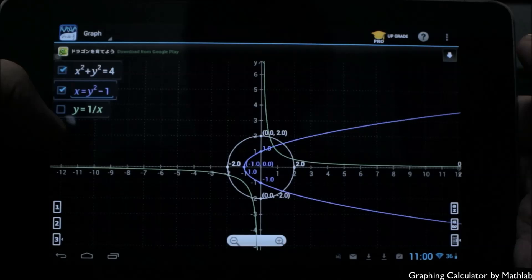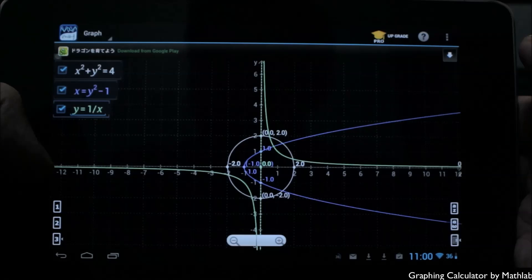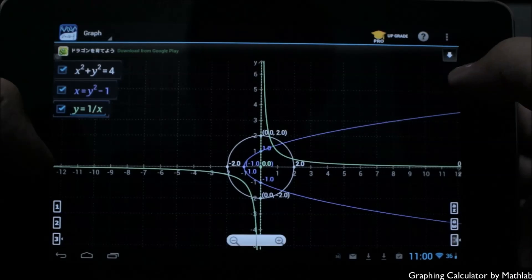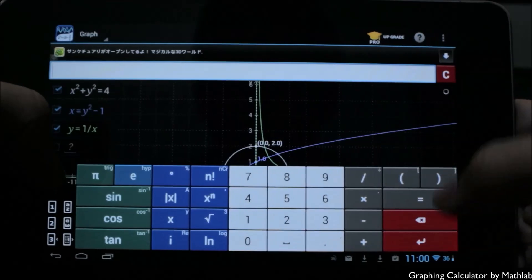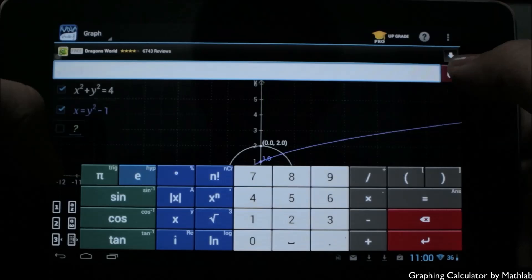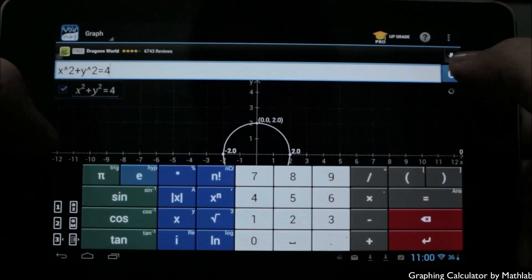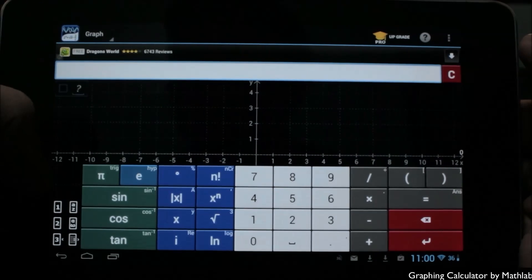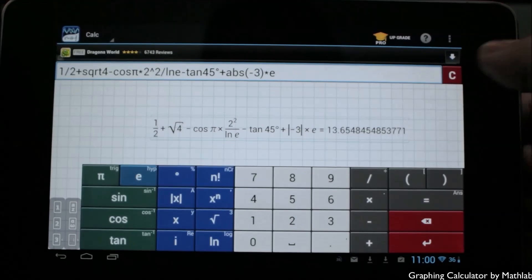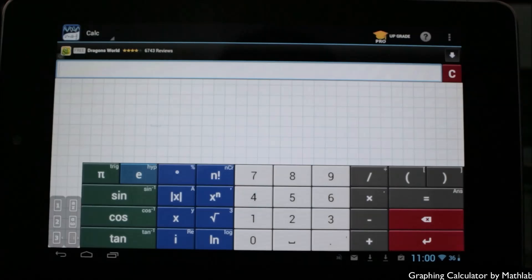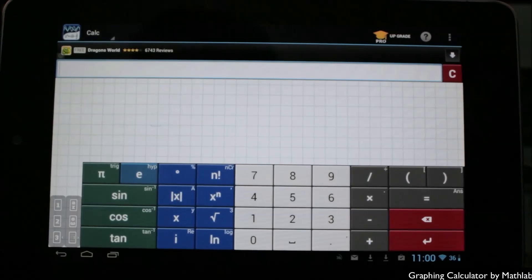That about sums up Graphing Calculator by Math Lab. Again, this is a free app in the Google Play Store. You can also check out the pro upgrade available via a $5.99 in-app upgrade to get more features. This is a scientific calculator, a graphing calculator, a fraction calculator, algebra calculator, matrix calculator, and more, all in one easy-to-use, powerful application. You can find this in the Google Play Store today.